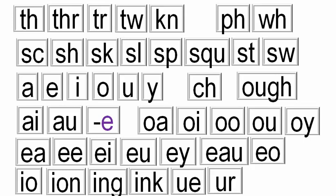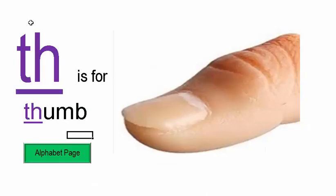I'm looking at combinations of letters. If you look at the sheet in front of you, you have a lot of combinations of letters in the English language. For example, here is TH. Now I'm going to go through all of these and give you their sounds. TH gives you the TH sound, as in thumb. Here's a thumb.